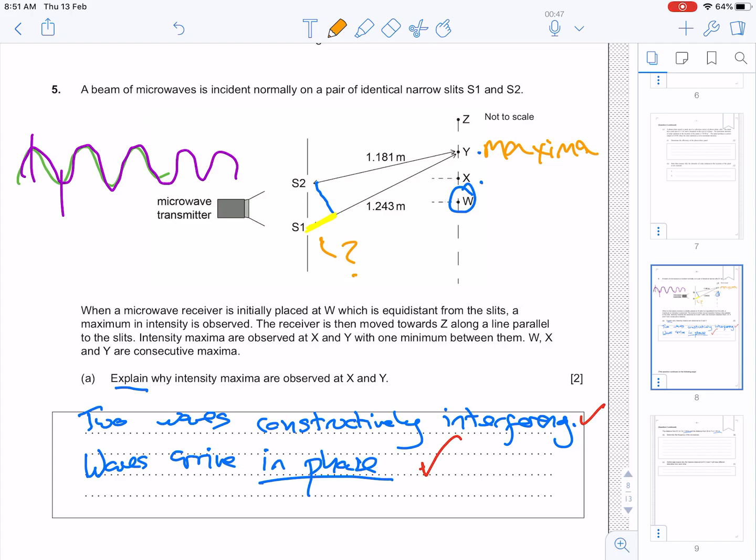Well, we know that it has to be N lambda, where N is an integer. Now, we can do a bit better than that, because we know that at W, the path difference between these two will be 0, because they've both travelled, if you like, down an isosceles triangle.